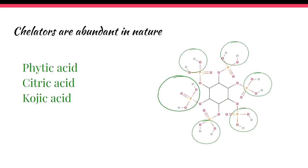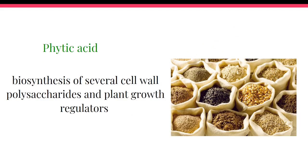Oxidative stress is responsible for the aging caused by oxidative stress, neuropathy, degenerative diseases, or meddling with the function of liver, kidney, and other organs. Chelators do not necessarily come only from the laboratory — they are abundant in nature. Specifically, phytic acid, citric acid, and kojic acid are available in nature. Phytic acid is very abundant in seeds, grains, and nuts, and is responsible for the biosynthesis of several cell wall polysaccharides and plant growth regulators.